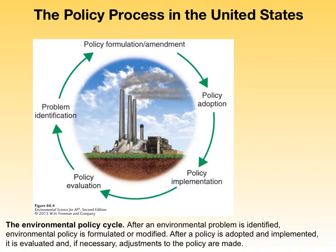There are five basic steps in a policy cycle: identify the problem, formulate the policy, policy adoption, policy implementation, and then evaluation to see if the policy was effective. This figure shows that the process is circular or reiterative, and as the policy is evaluated, its constant need to be amended is there. When an amendment is initiated, it follows through the same process all over again. Many good environmental policies have had numerous amendments — the Clean Air Act has been amended at least twice, and even the original Clean Air Act of the 1970s was modified many times before it became legislation.